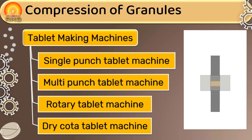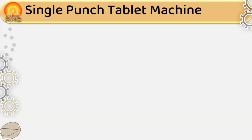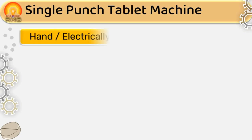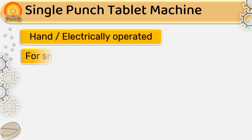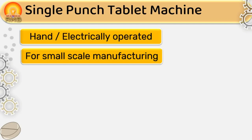Let's discuss the single punch tablet machine first. A single punch tablet machine can be hand operated or electrically operated. It is used for small scale manufacturing of tablets.